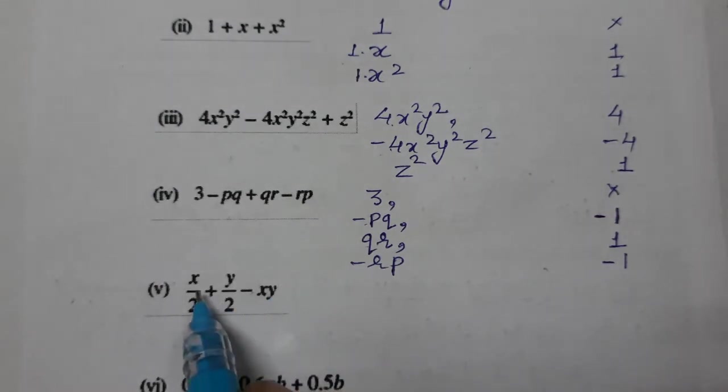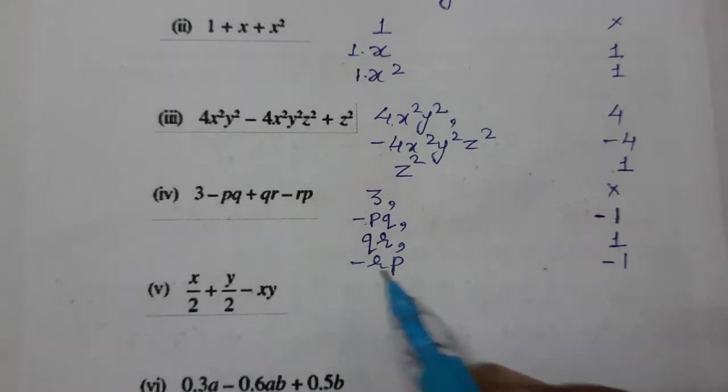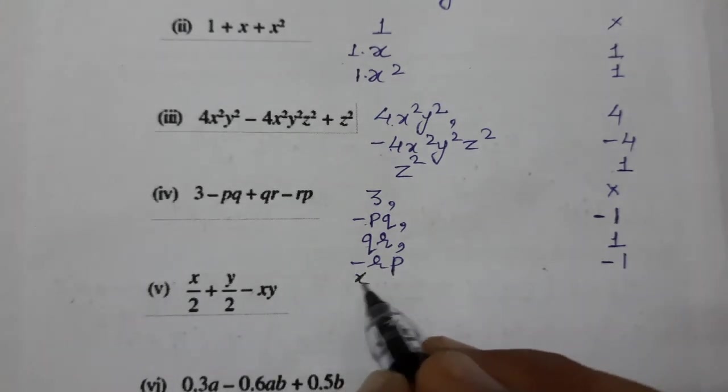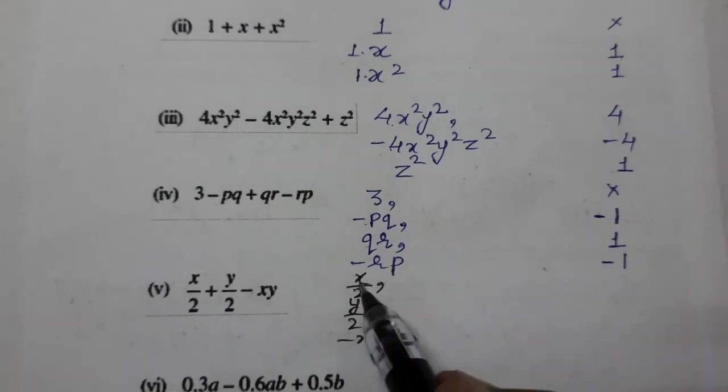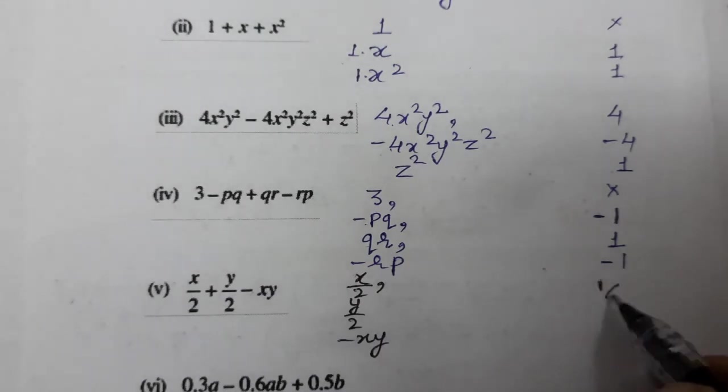Next comes x/2. Write coefficient for this also: x/2, y/2, and last is -xy. So what are the coefficients? 1/2, second one also 1/2, and third one is -1.